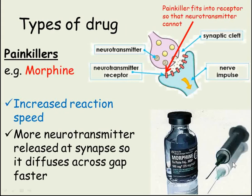The third type of drug we'll now look at are painkillers. An example of a painkiller is morphine. Painkillers work by blocking nerve impulses. If the neuron is carrying a pain message towards the brain and it's blocked, the brain will not receive the message and so the person doesn't feel the pain. This happens because the painkiller molecules sit in the receptors in synapses so that the neurotransmitter is unable to bind to them, meaning a new impulse is not started in the following neuron.